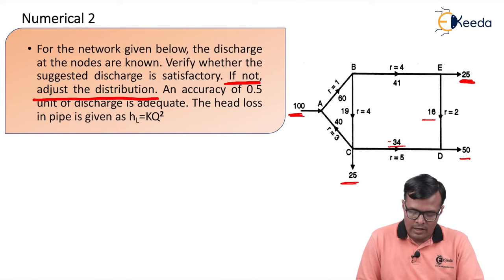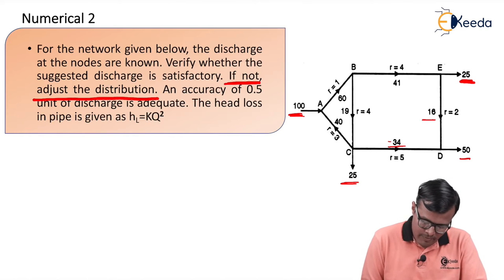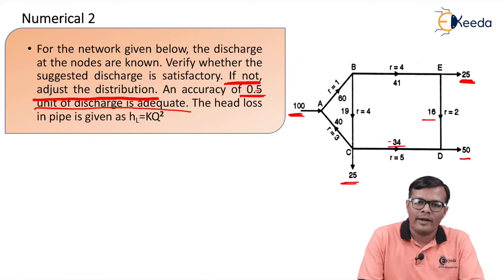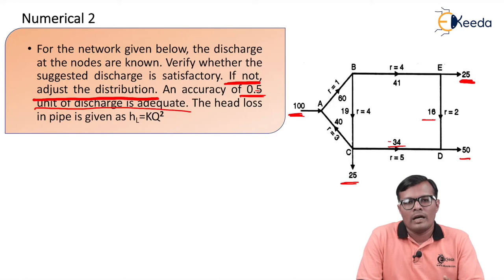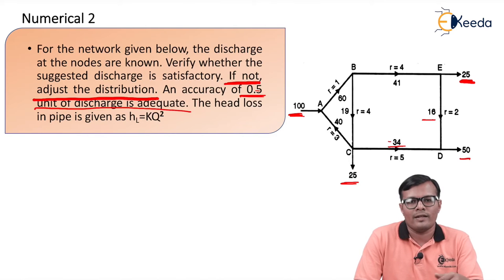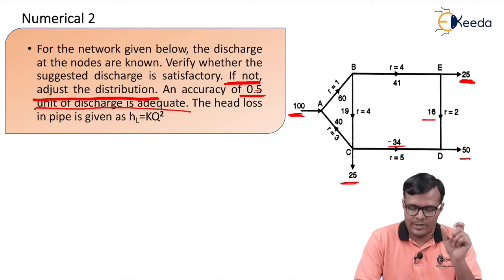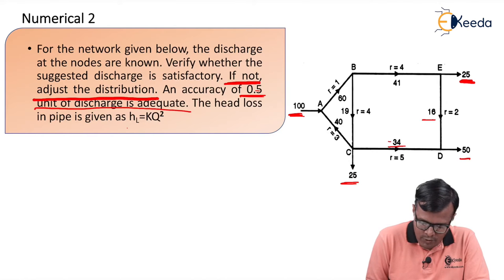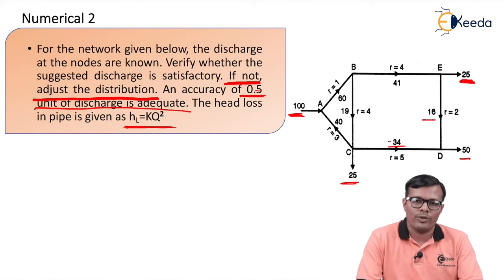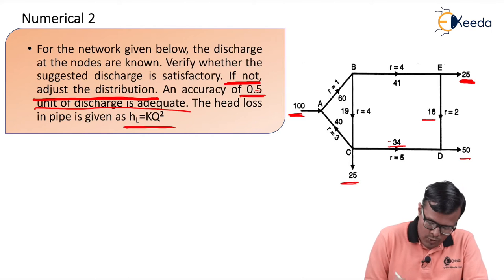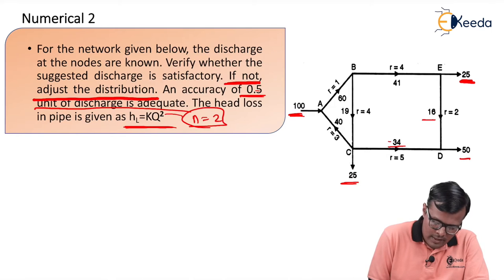We have to adjust the discharges using this method, and an accuracy of 0.5 units of discharge is adequate. This means the number of iterations is restricted: if in an iteration the value of delta Q is greater than 0.5, we iterate again; if it is not, we stop the iteration and finalize the discharges closest to the accurate values. The head loss in the pipe is given as HL = k × Q². The formula used in the Hardy Cross method is HL = k × Q², so n = 2.